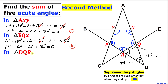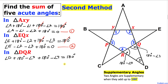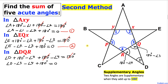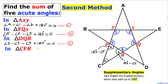Now let's focus on triangle DQR. We know angle D and its two supplementary angles must add up to 180 degrees. Adding them and setting equal to 180 degrees, the two 180-degree terms cancel on both sides. After simplifying, let me call this equation number three.